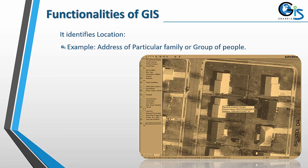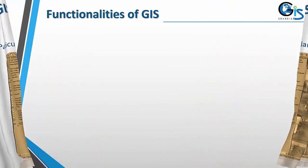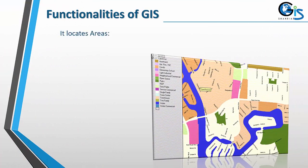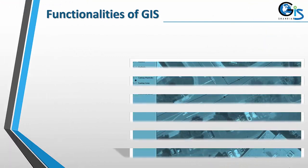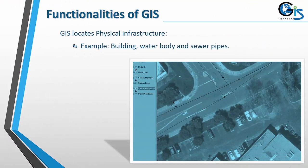Now let's see the functionalities of GIS. GIS identifies location — for example, the address of a particular family or group of people. It locates areas — for example, land use and area boundary. GIS also locates physical infrastructure, for example buildings, water bodies, and sewer pipes.